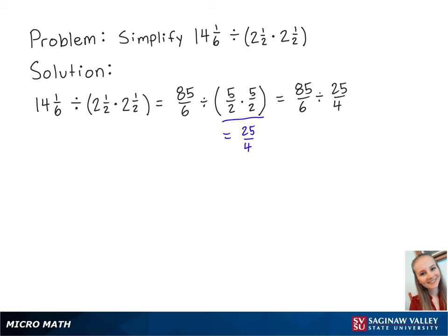When we divide two fractions, we multiply the first fraction by the reciprocal of the second fraction. So this is equal to 85/6 times 4/25ths.